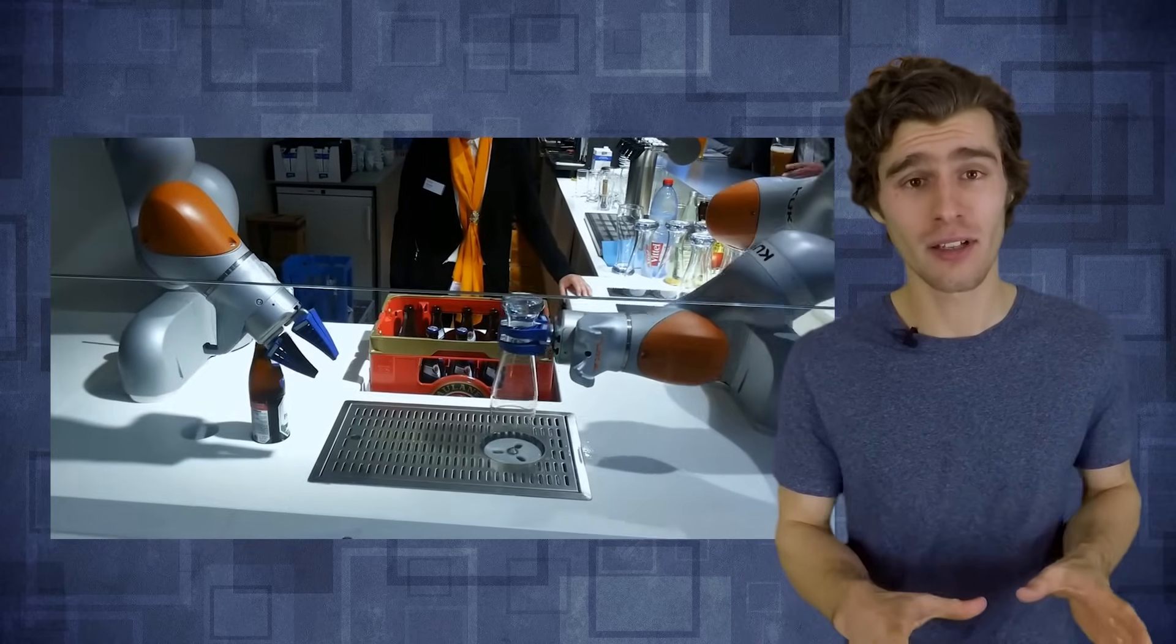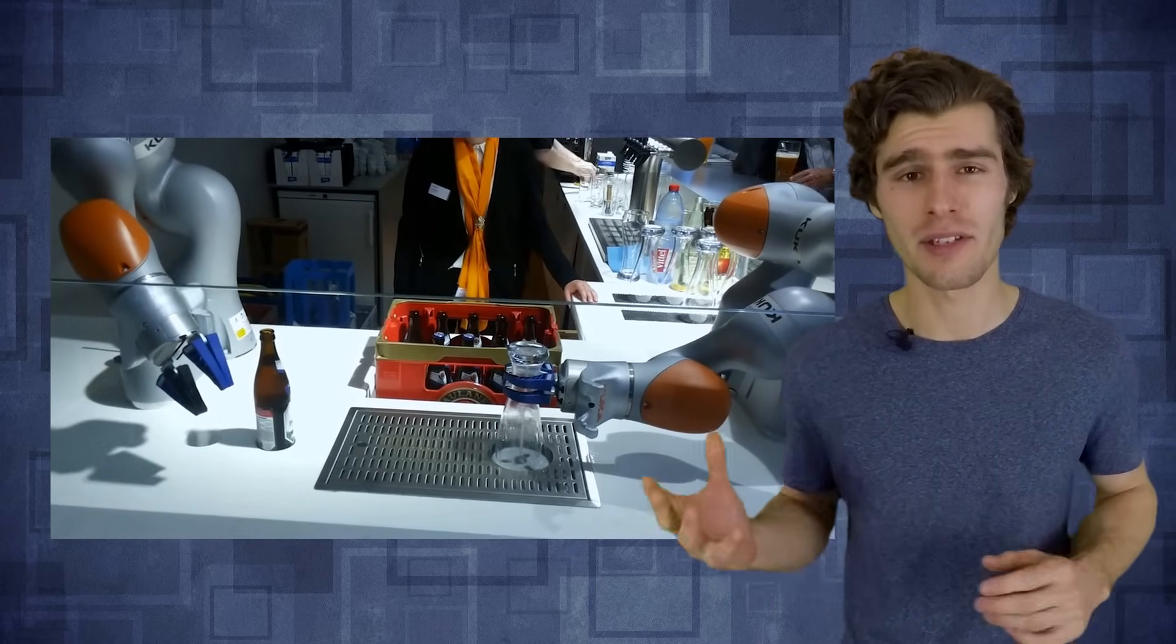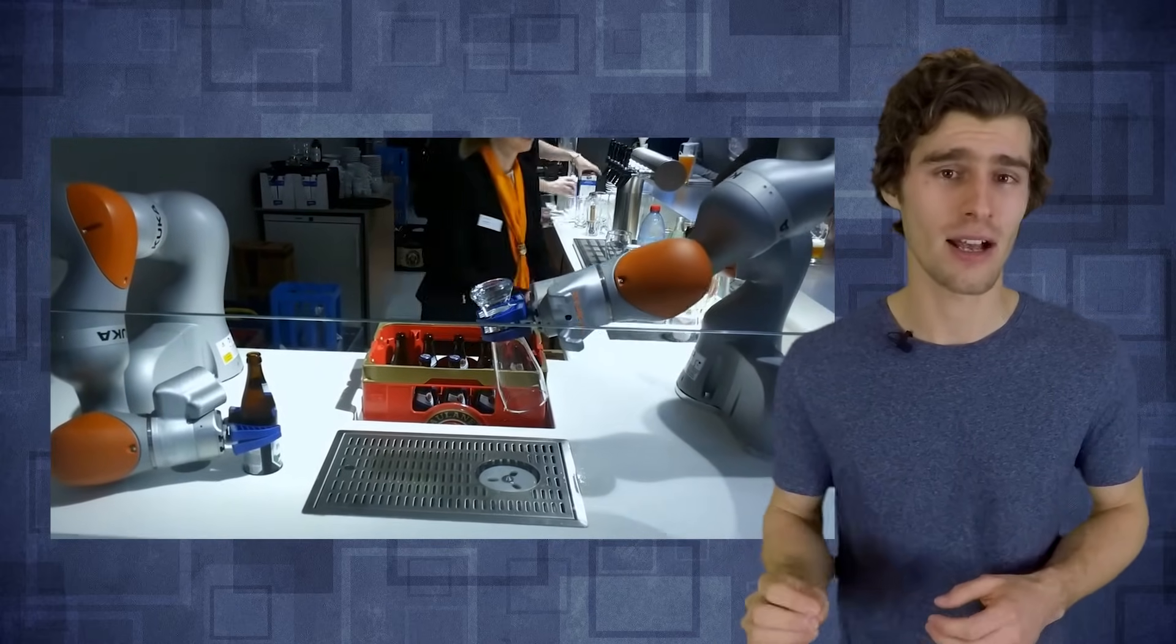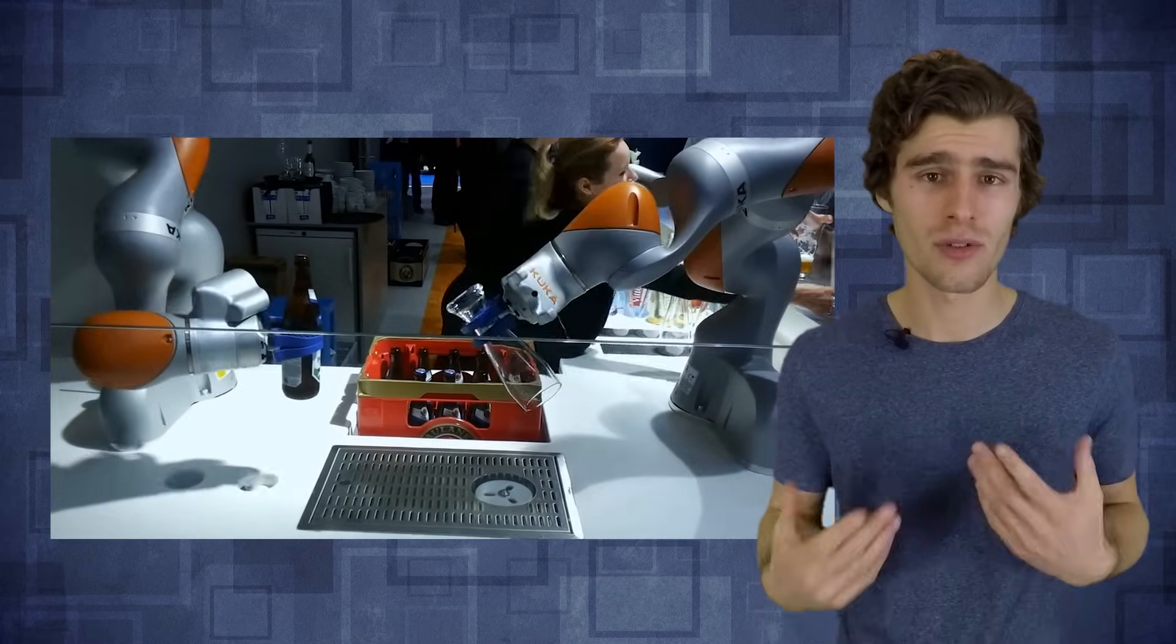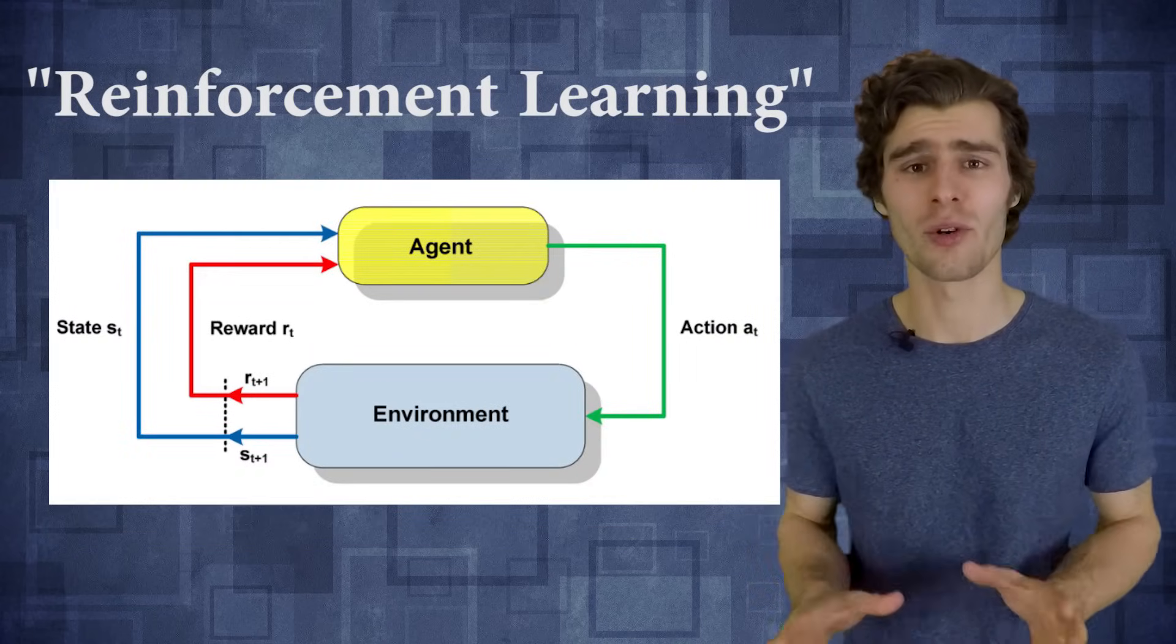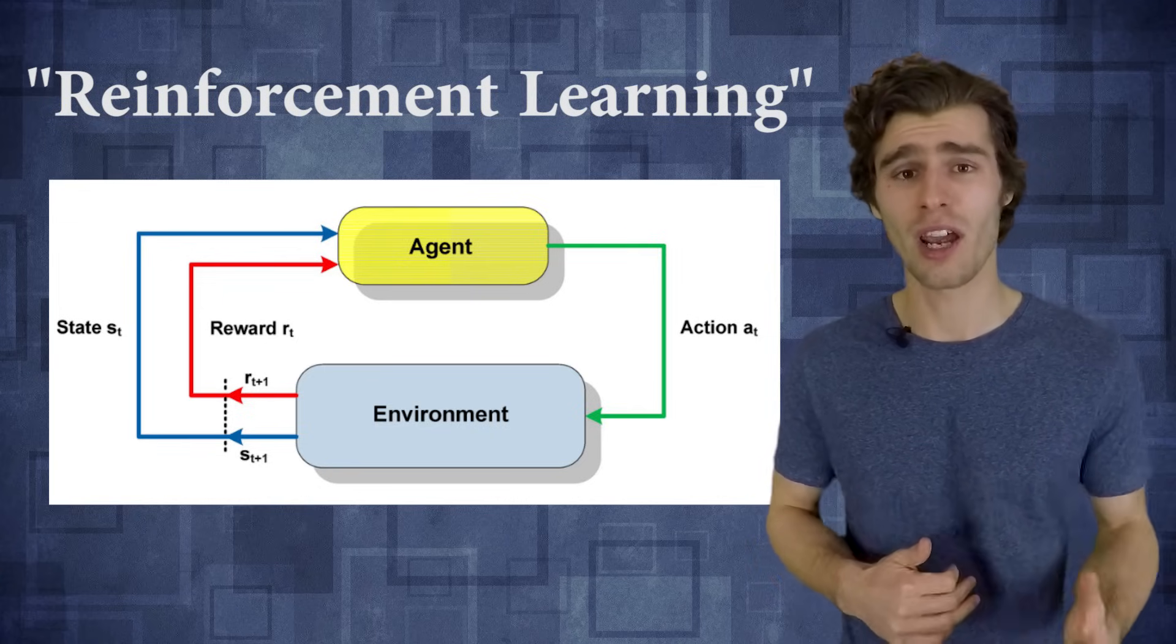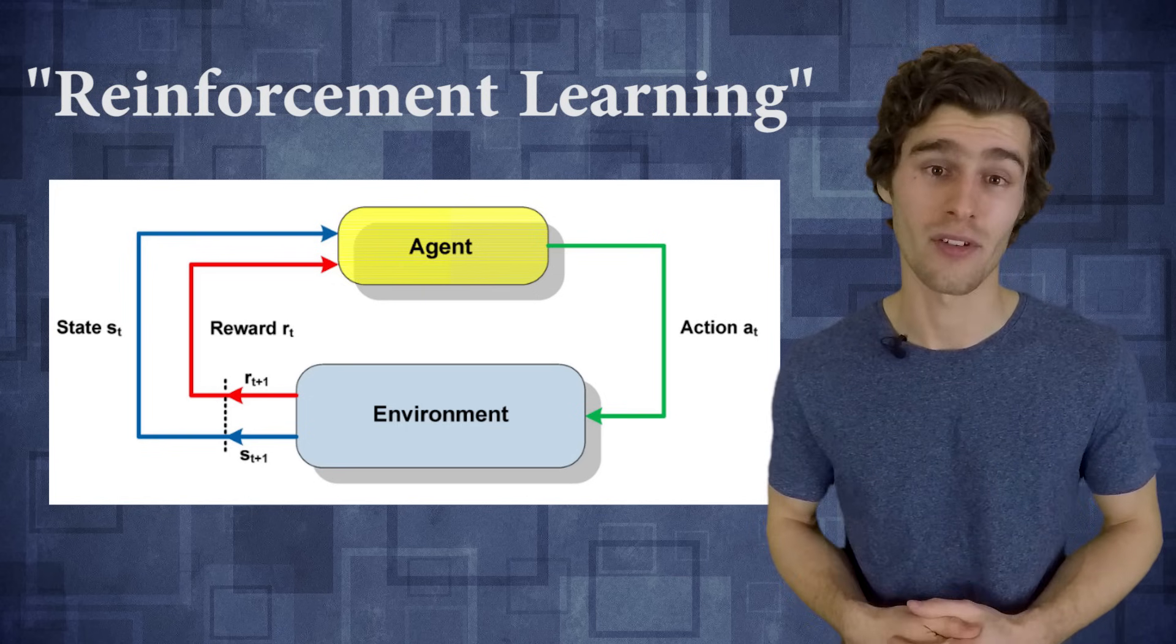And so it turns out that having a robot learn how to do something very simple, like picking up a bottle of beer, can be a very challenging task. And so in this video, I want to introduce you guys to the whole subfield in machine learning that's called reinforcement learning, which I think is one of the most promising directions to actually get to very intelligent robotic behavior.